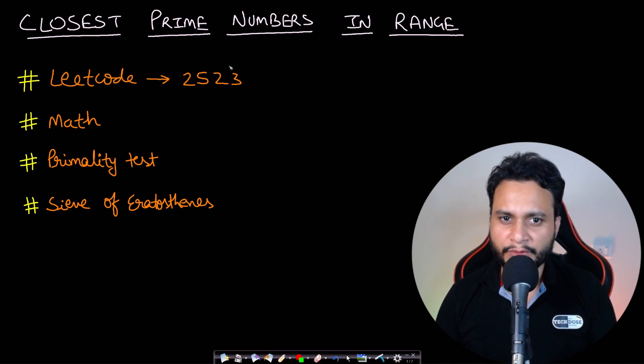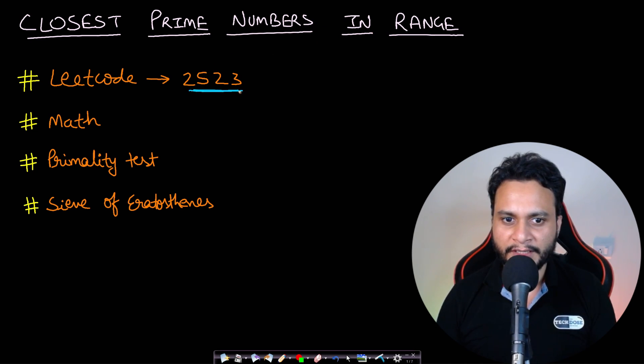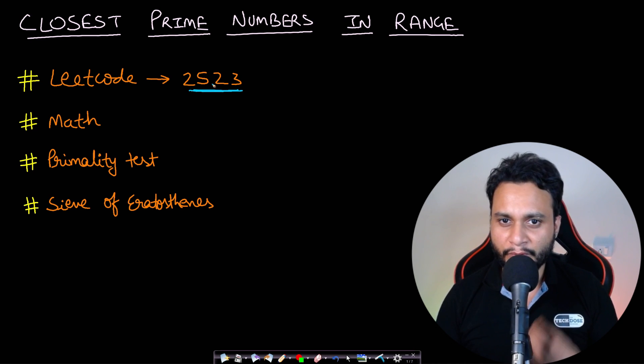Hello guys, welcome back to Tech Dose. In this video we will see the Closest Prime Numbers in Range problem, which is LeetCode number 2523. Stay tuned till the end — I will have a bonus point at the end of the video.